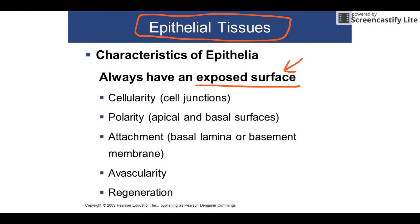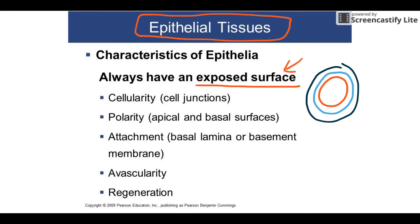People often think only of external surfaces, but epithelial tissue also exists inside the body. For example, the inner layer of a blood vessel is made of epithelial tissue because it's exposed. The next layer would be connective tissue. The outside of every organ is epithelial tissue, and the lining of all internal tubes is also epithelial tissue, because they're all exposed surfaces.